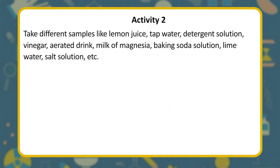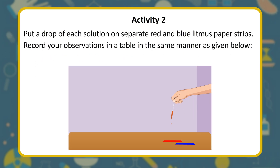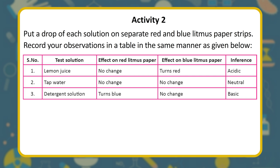Activity: take different samples like lemon juice, tap water, detergent solution, vinegar, aerated drink, milk of magnesia, baking soda solution, lime water, salt solution, etc. Put a drop of each solution on separate red and blue litmus paper strips and record observations. Results: lemon juice — no change on red, turns red on blue (acidic); tap water — no change on either (neutral); detergent solution — turns blue on red litmus (basic). Solutions which do not change the color of either litmus are neutral — neither acidic nor basic.